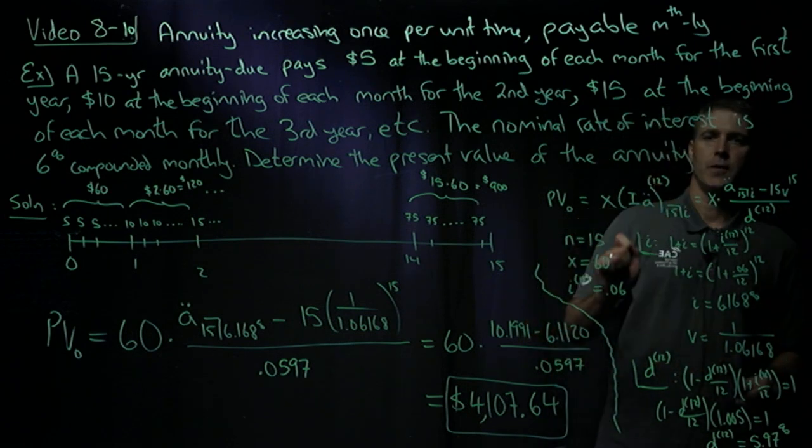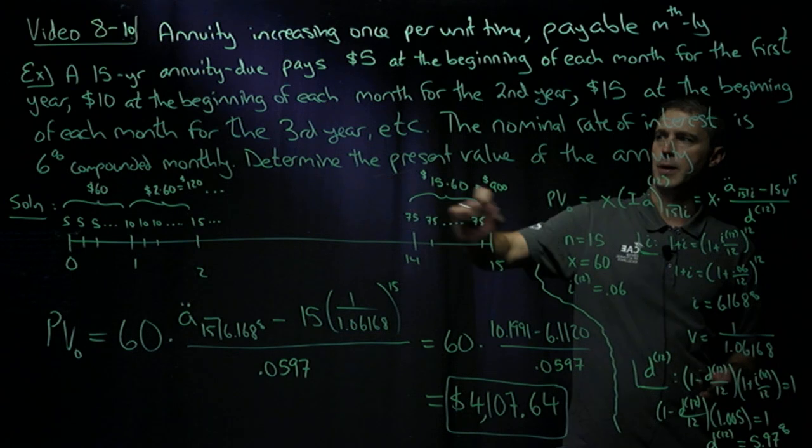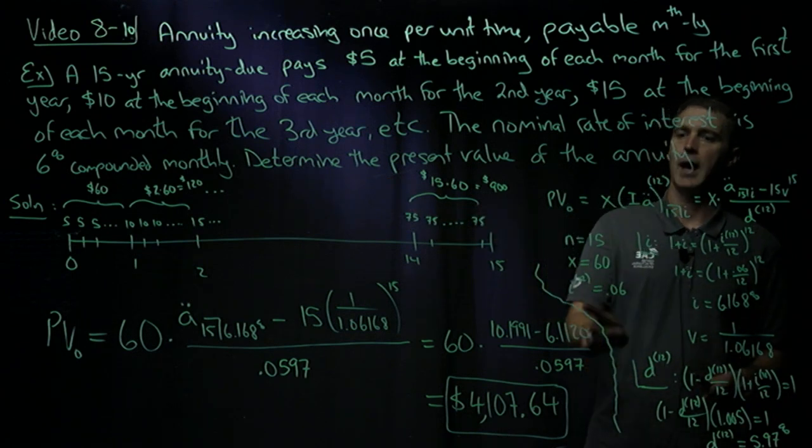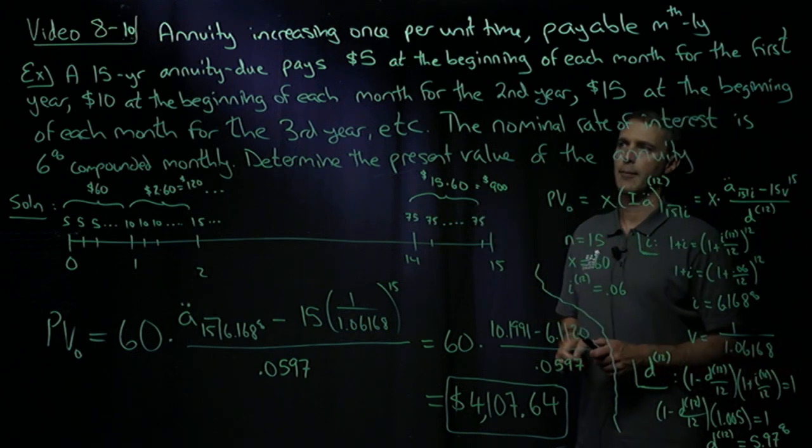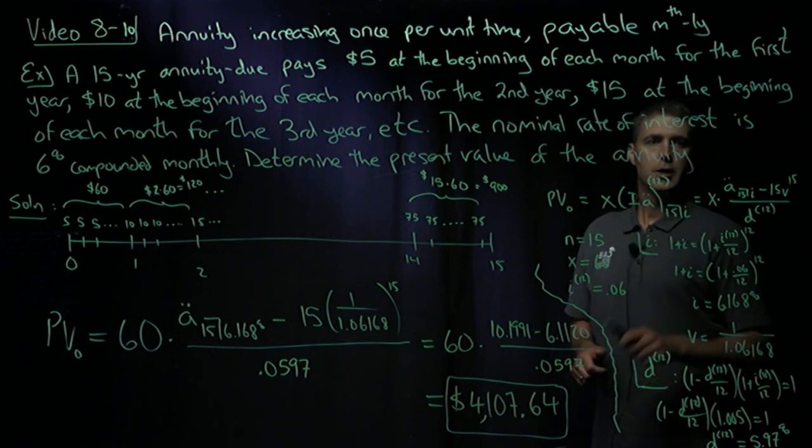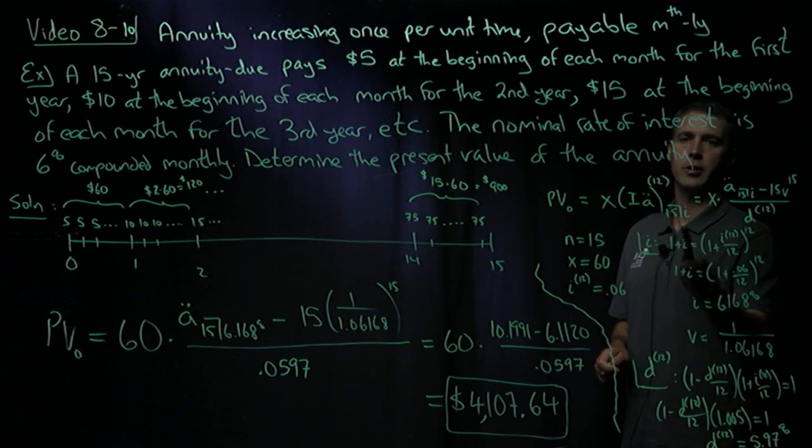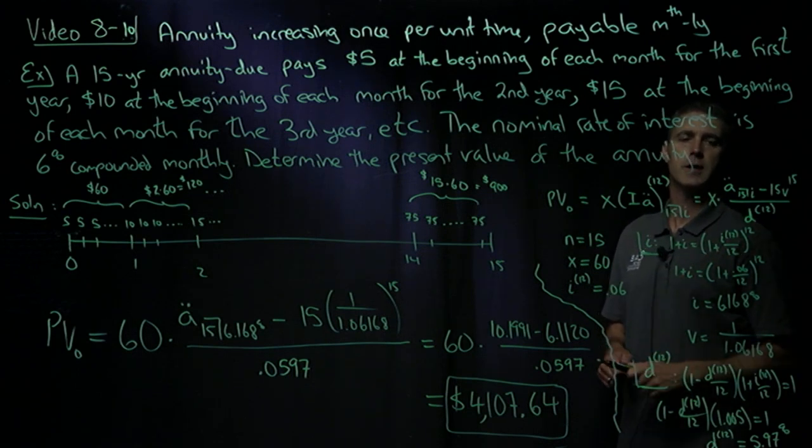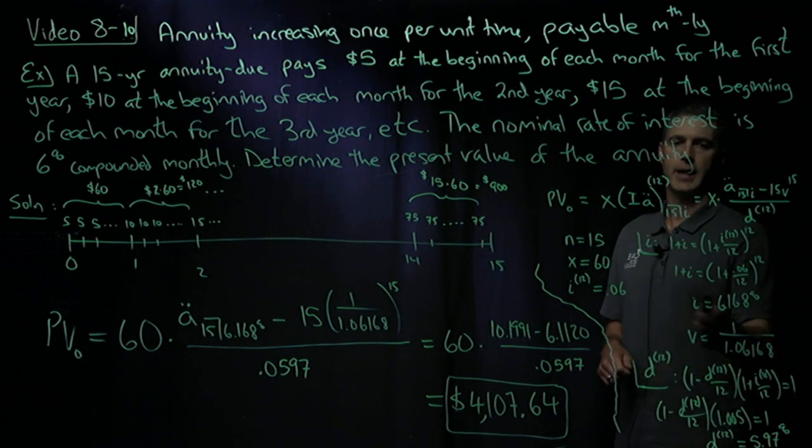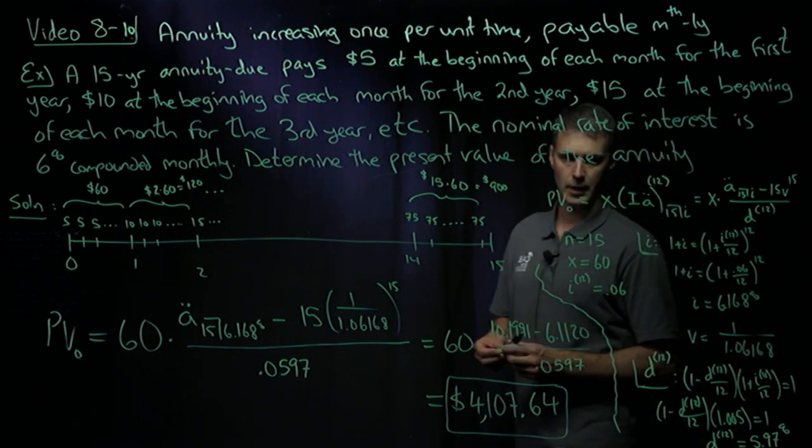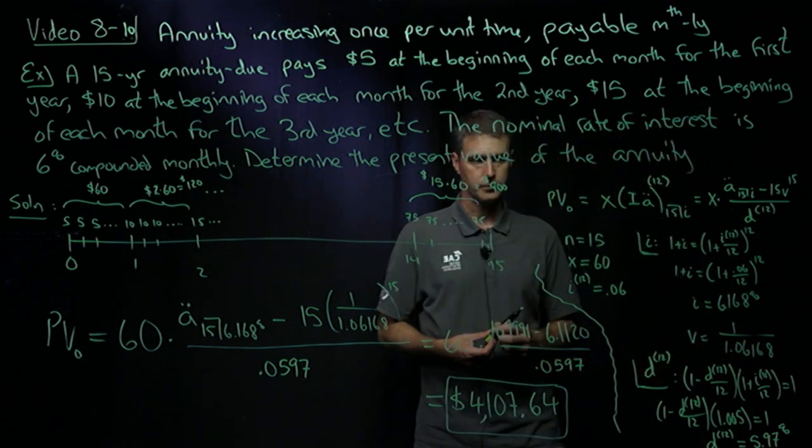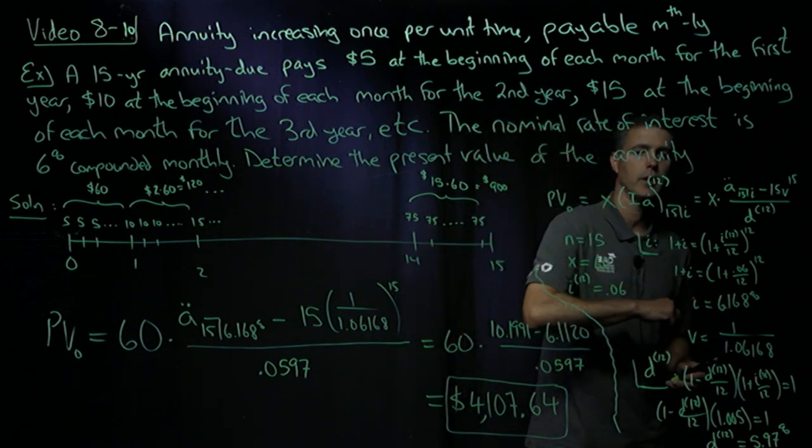So my N is 15. My time value diagram helps me understand that my X is 60. I was told my i^(12), my nominal interest rate compounded monthly was 6%. So I first calculate i over here using my standard one year of annual effective interest. It's the same as 12 months of monthly effective interest. Plug in my monthly stuff and I get an annual effective interest rate of 6.168%. So I can also calculate my V value quite quickly.